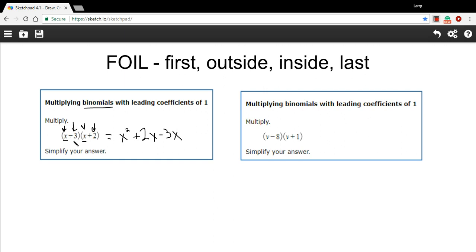And then finally, the last terms are the negative 3 and the positive 2. Negative 3 times 2 is a negative 6. And now all we need to do is simplify by combining the like terms. We have a 2x and a negative 3x. That's going to simplify to a negative 1x or just negative x. So the simplest way I can write this is x squared minus x minus 6.